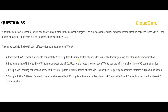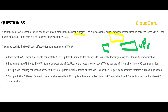Next question — please pause the video here to read it carefully. There is one account with two VPCs situated in the US-East-2 region, so both VPCs are in a single region. The business must permit network communication between these two VPCs. Each month, about 500 GB of data will be transferred between the VPCs. What is the most cost-effective solution?